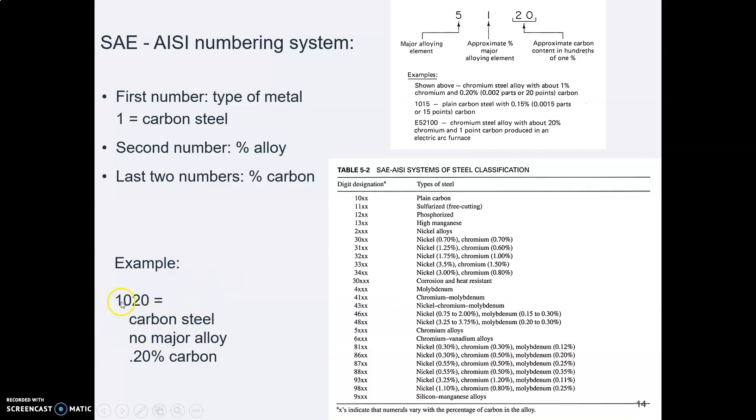So, 1, it's carbon steel. 0, there's no major alloy. 20, it's 0.20 of one percent of carbon.